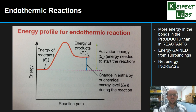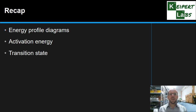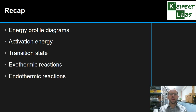A classic example of an endothermic reaction is chemical cold packs. Lots of dissolving processes are endothermic — not all of them, but some, where when you dissolve a salt in water the overall temperature decreases. So to recap, we looked at what an energy profile diagram is, how we draw them, and key features. We defined activation energy and transition state, and looked at examples of diagrams for exothermic and endothermic processes. Thanks very much for watching. Bye for now.